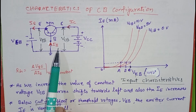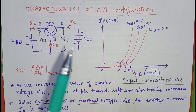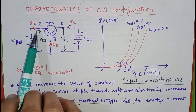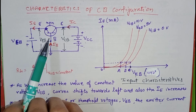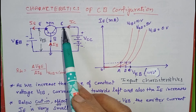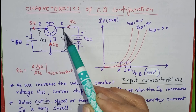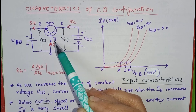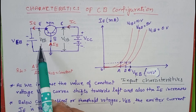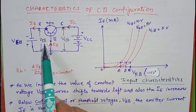This is the circuit diagram of common base configuration. In this, we will forward bias the emitter and base junction and reverse bias the collector base junction. The voltage between collector and base is called VCB and the voltage between emitter and base is known as VEB.